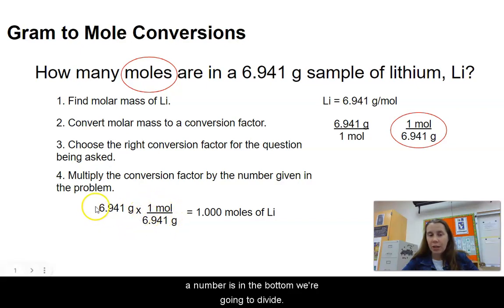To put this into a calculator, you would do 6.941 times 1 divided by 6.941. So that would just give us one mole of lithium. And that makes sense because if this is the molar mass of lithium, that is going to be the mass of one mole.